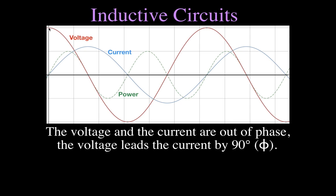You'll notice that the voltage oscillates between positive and negative values through one cycle, the current also oscillates between positive and negative values, and the power oscillates between positive and negative values as well. When we calculate power, we often want the average power, and the equation we use is: average power equals the RMS voltage times the RMS current times the cosine of the phase angle phi.